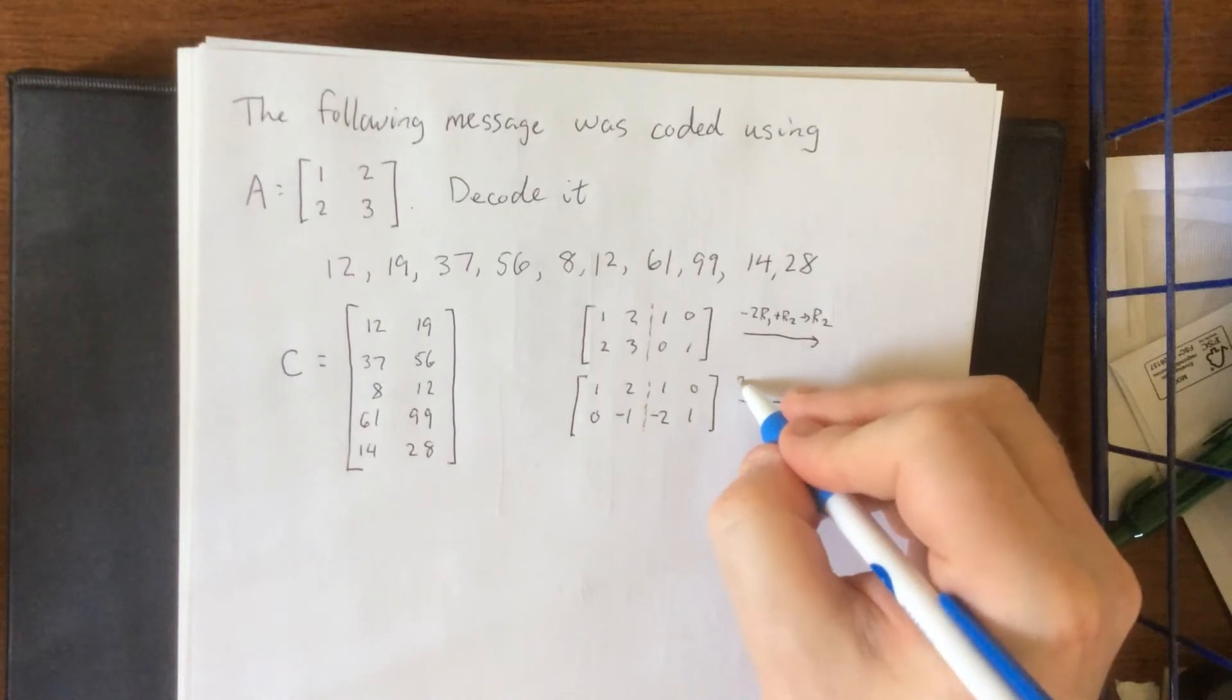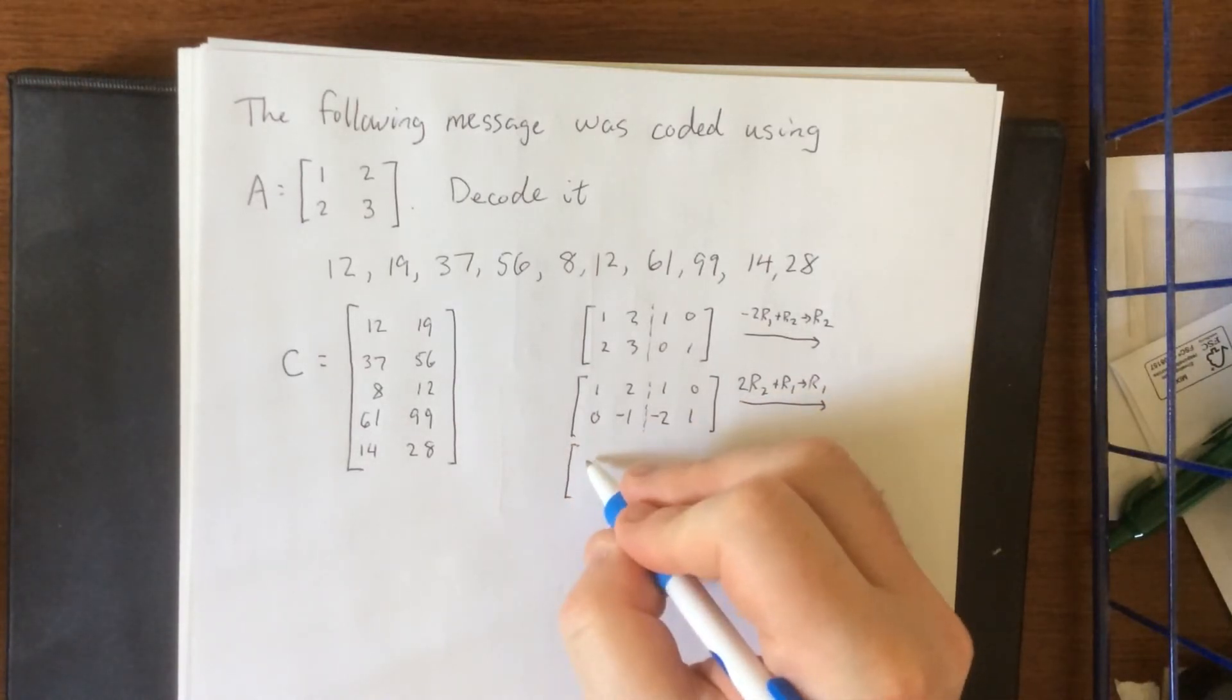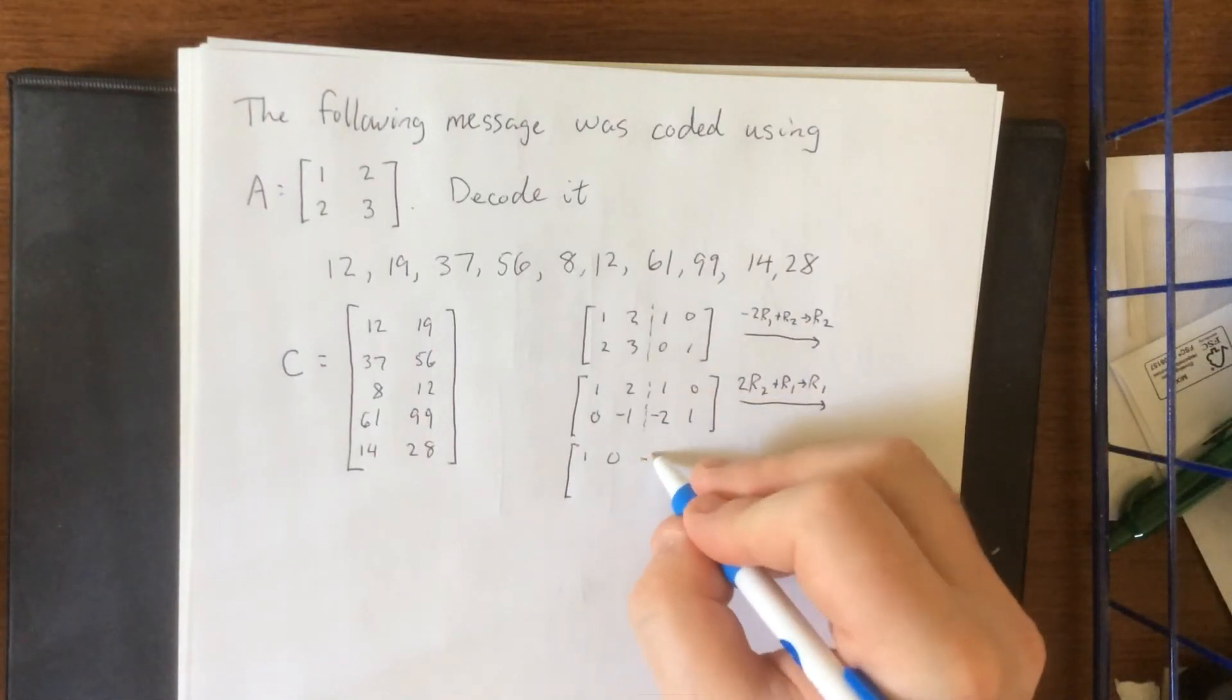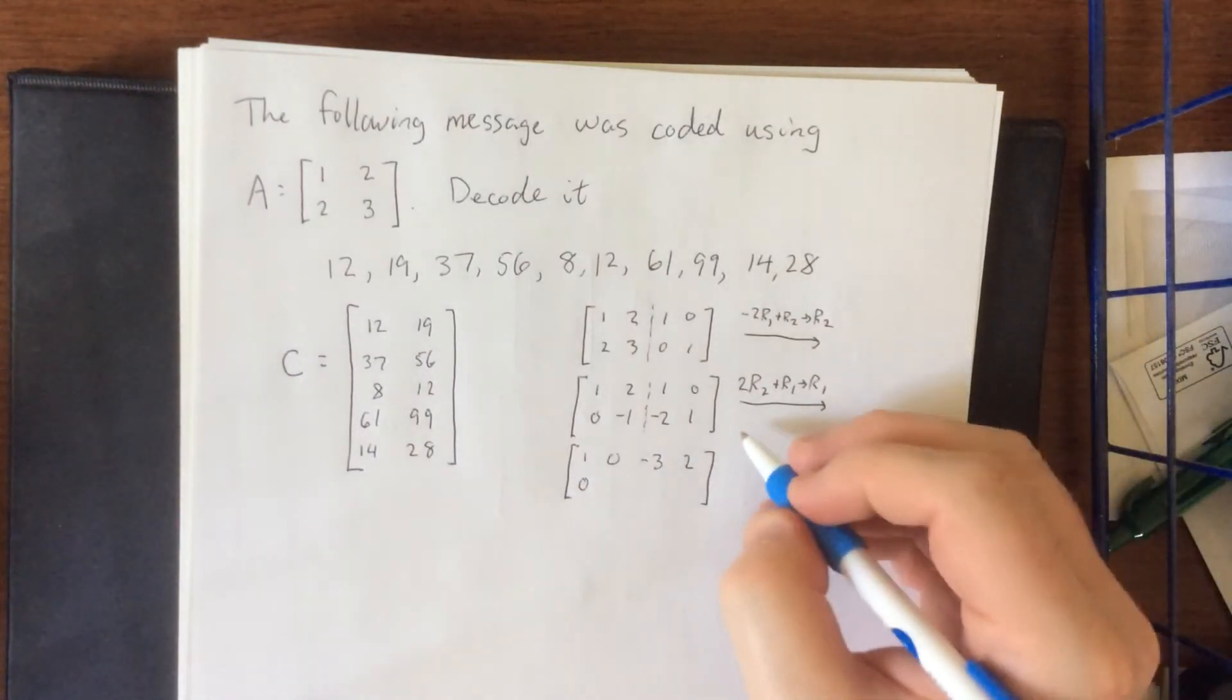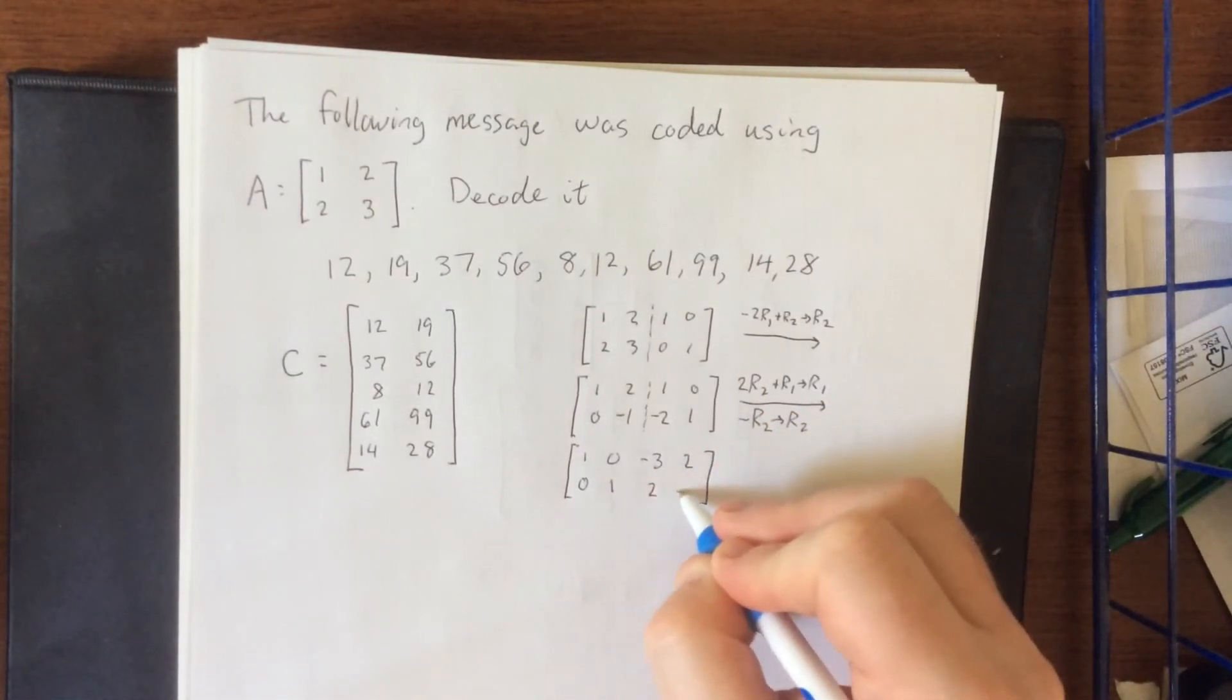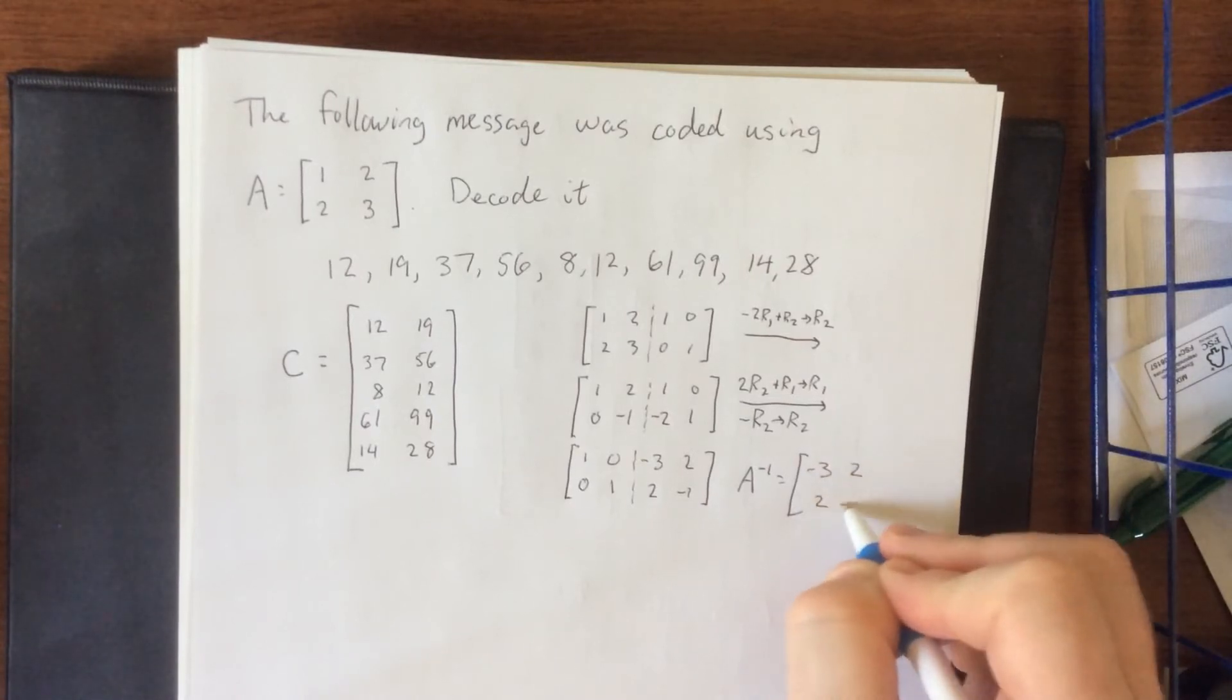Then we'll take two times the second row added to the first row. Go a little bit out of order here. We'll do 1, 0, let's see doing two of these added to that so that'll be negative 3, 2, and then let's go ahead and add in negative R2. That'll become the new R2. So 1, positive 2, and negative 1. So our decoding matrix A inverse will be negative 3, 2, 2, negative 1.